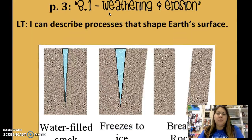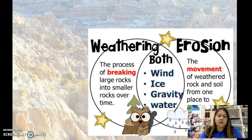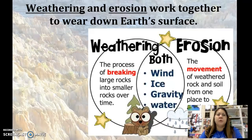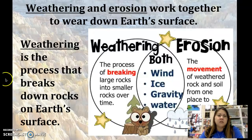We're looking at 8.1 weathering and erosion and the processes that can shape our surface. These two things — weathering and erosion — work together to wear down our surface and move material around. Weathering itself is the process that breaks down rocks.